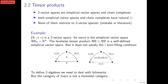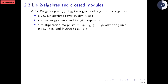To define Lie 2-algebras, we need to deal with bilinearity, but the category of two-vects is not a monoidal category. The simple profitable idea is to look at groupoid objects in the category of Lie algebras. You define Lie 2-algebras as having two Lie algebras G1 and G0 with five structure maps — source, target, unit, multiplication, and inverses — satisfying the expected identities.